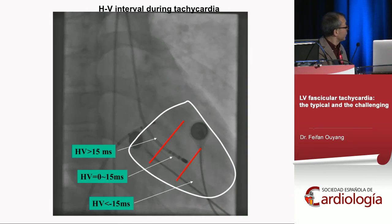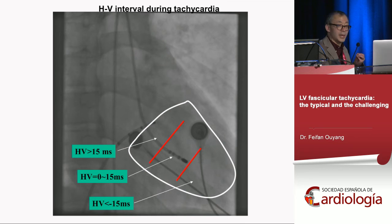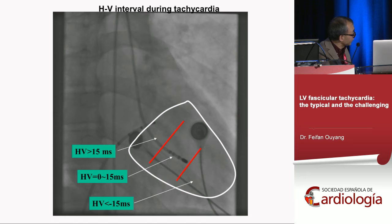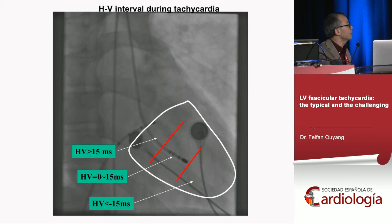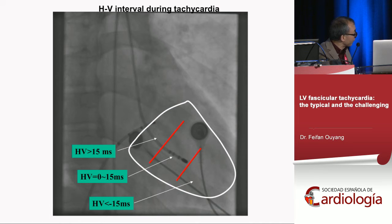During atrial induction, you can sometimes see the His bundle before the induced tachycardia, and sometimes you see the His merged with ventricular activation. Using His activation, you can know where the tachycardia exits. We define three different parts based on HV interval during tachycardia: if HV interval is more than 15 milliseconds, it indicates upper septal VT. If HV is less than 15 milliseconds, the arrhythmia exits at a more basal region, in the posterior fascicular area.